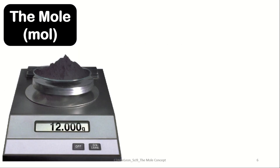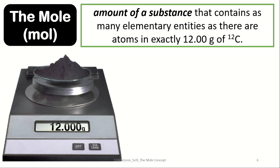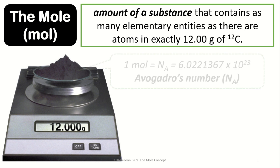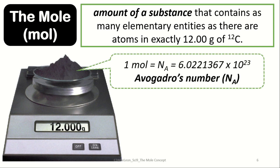Now let us proceed to the concept of the mole. The mole is considered the core of all stoichiometric computations in chemistry. The mole, symbolized as 'mol', refers to the amount of a substance that contains as many elementary entities as there are atoms in exactly 12.0 grams of carbon-12. Every 12 grams of carbon-12 contains approximately 6.02 × 10²³ particles, which is equivalent to one mole — also known as Avogadro's number.